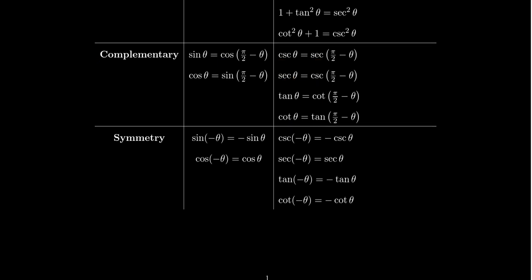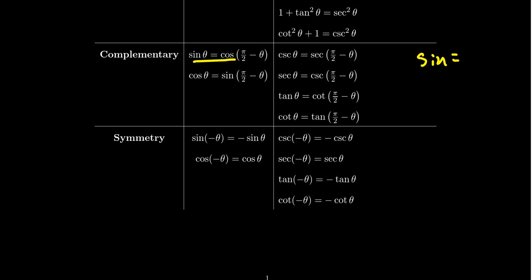This gives us another way to write everything in terms of sine without cosine, though it gets a bit messy because it changes the angle. Also, this explains why it's important to always write the angle — because if you drop the angle, you'd get sine equals cosine, which is false in general. That only happens when you have a self-complementary angle like 45° (or π/4 in radians).